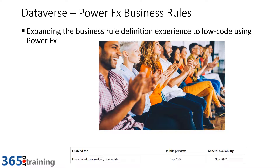Next up is another Dataverse one: Power FX business rule support. This enhances business rules — the concept that you can specify a domain rule, for example that an amount can't be over 50,000 when certain conditions are true. Business rules mean you can do things without pro code resources, and they run consistently regardless of where somebody is working with the data. Bringing Power FX to it increases the power and capability of business rules, further reducing the need for custom code. This will be in preview in September of 2022 and general availability in November of 2022.